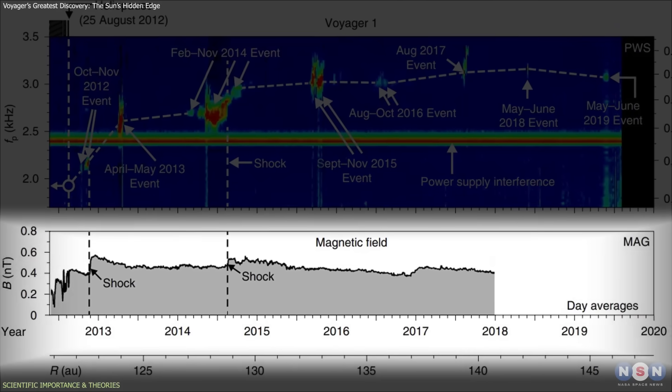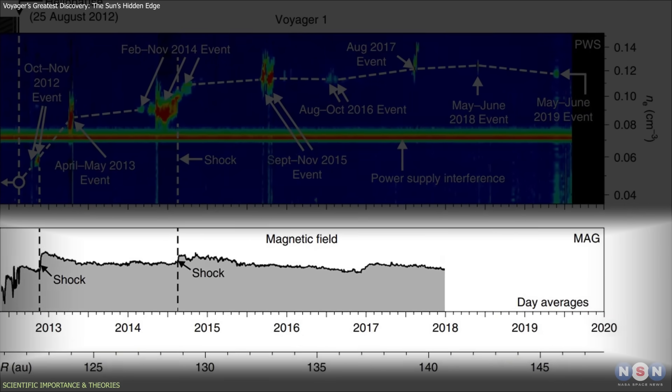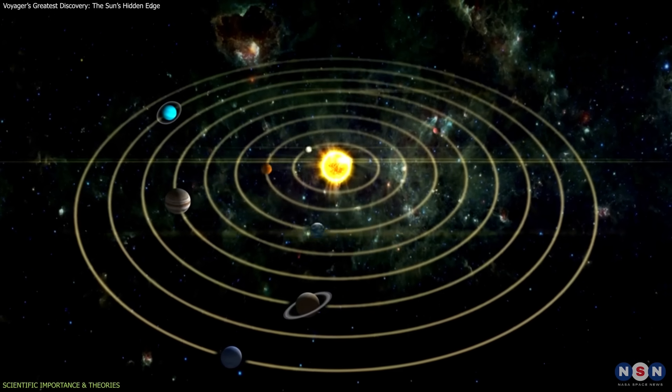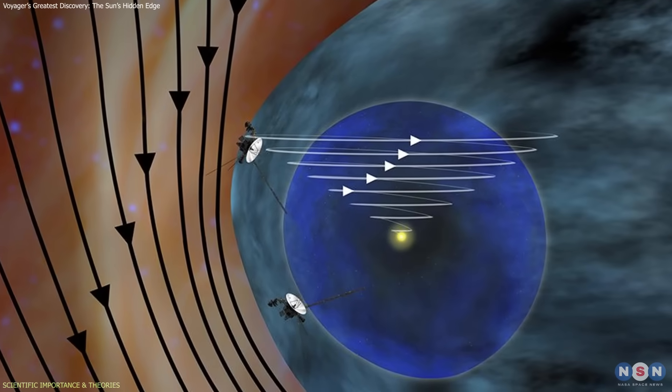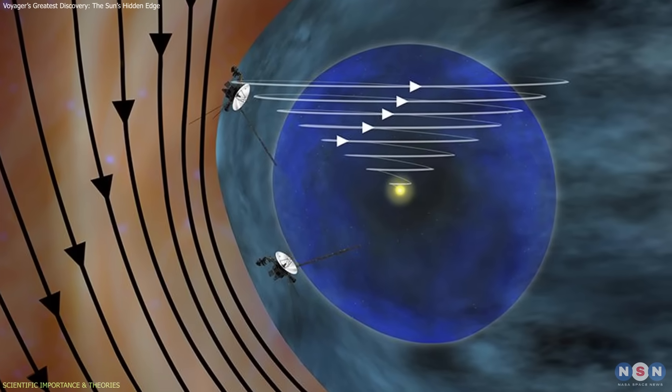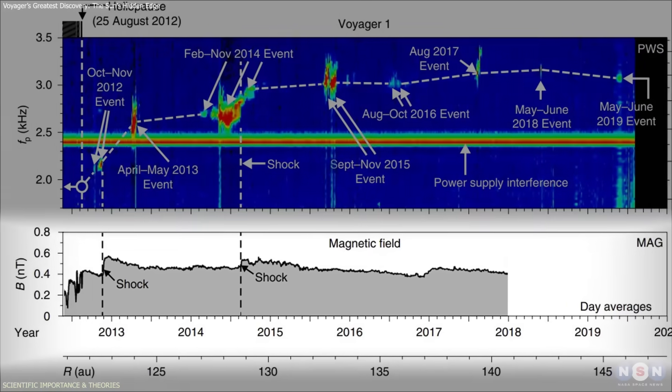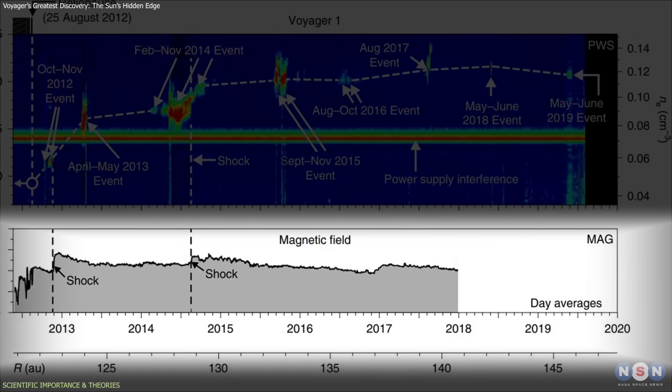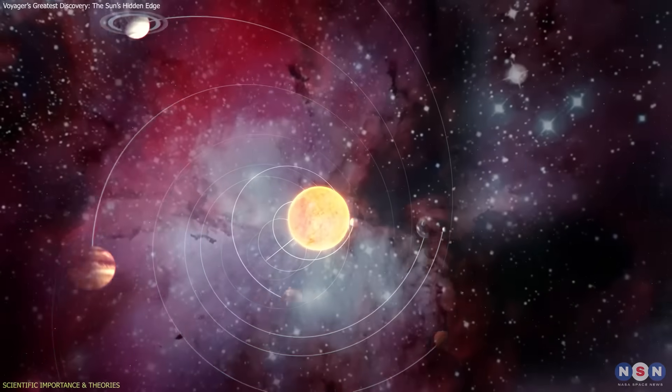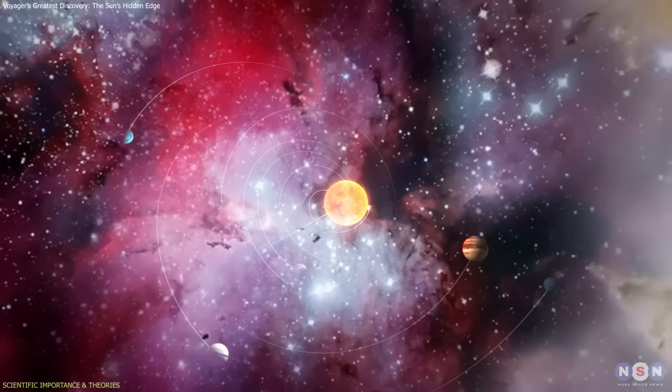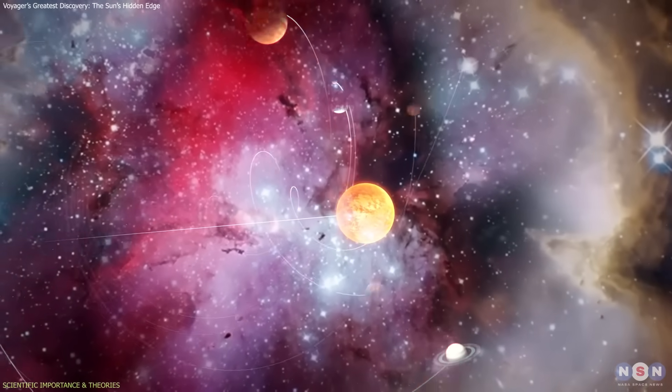Even more intriguing were the magnetic field measurements. Scientists once believed the magnetic field inside the heliosphere would point in a very different direction than the one outside it. Instead, both Voyagers found the two fields nearly parallel, suggesting a smoother transition between the solar and galactic magnetic environments than models predicted.